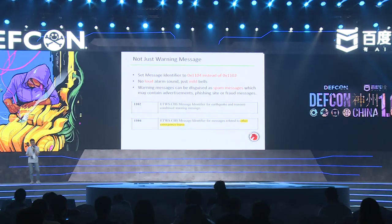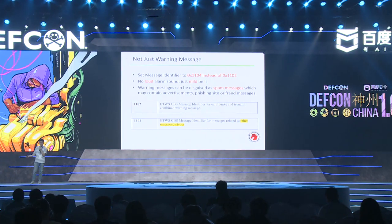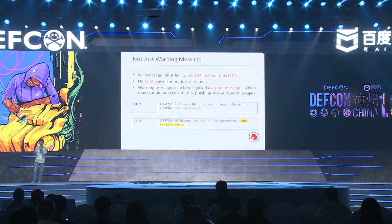We found that when we set the message identifier from 0x1102 to 0x1104, the mobile phone does not make a harsh alarm — it will just make a mild bell sound. We will see this in another demo. We can even make the warning message send advertisements completely unrelated to an earthquake, and we could add phishing websites and phishing phone numbers into it.